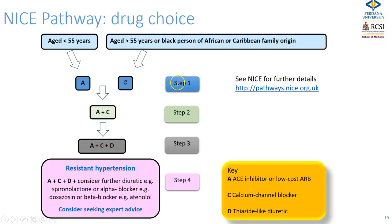Step two: if the blood pressure is not controlled to target after three months, you should combine these drugs. After another three months if still uncontrolled, you should add a thiazide-like diuretic, for example indapamide.